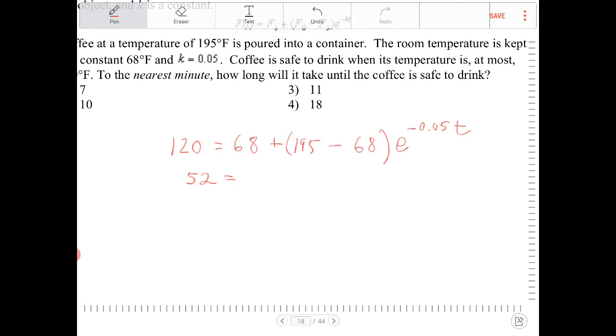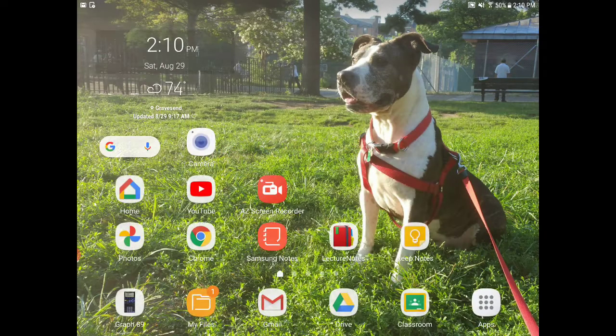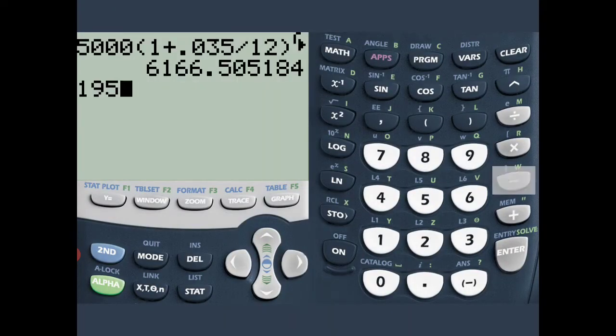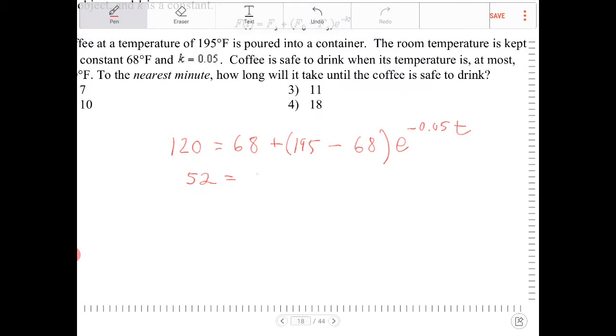Yes, we'll end with 52. 195 minus 68, that is, what is that? That is 195 minus 68. I am having brain freeze all of a sudden. 195 minus 68, 127, there you go. Okay, so this is going to be 127e to the negative 0.05t.